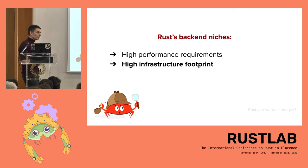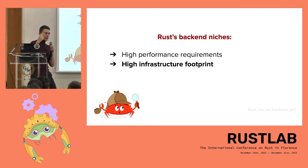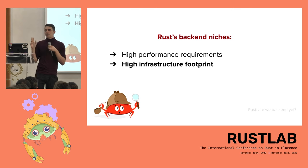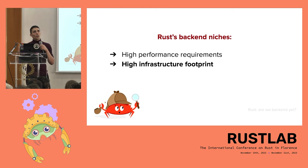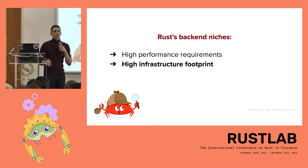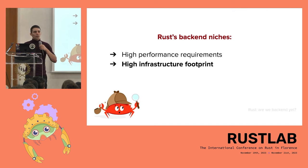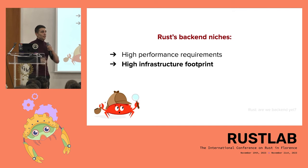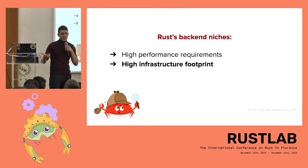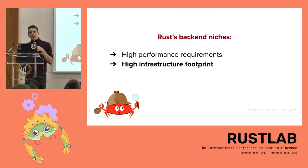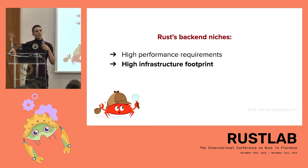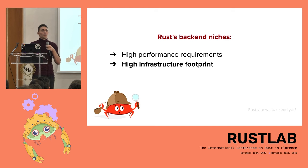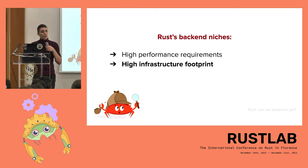Then you have high infrastructure footprint, which is a close cousin of high performance but with a slightly different twist. Here you're not necessarily interested in going faster — you're interested in doing more with less hardware. This might be a backend system that runs on a fleet of tens or hundreds of thousands of servers. When you can say the new system runs on 90% of that hardware, that can translate into millions or hundreds of millions of yearly infrastructure cost savings, plus environmental gains.